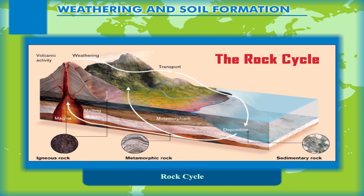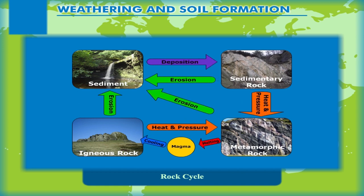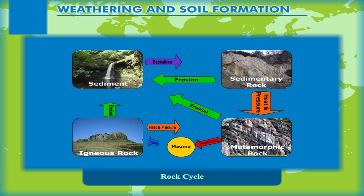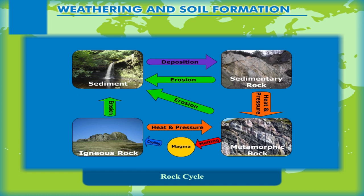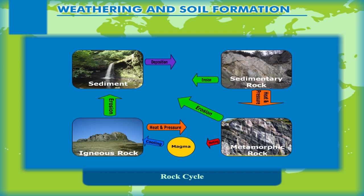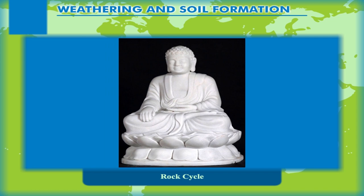Rock Cycle. The three categories of rocks are constantly forming from one another in a continuous circuit, which is known as the rock cycle. When igneous rocks are exposed to weather changes, they are broken and eroded and give birth to sedimentary rocks. Due to excessive pressure and heat, these rocks further undergo a change into metamorphic rocks. Thus, this cycle of change from one type of rock into another is called the rock cycle.